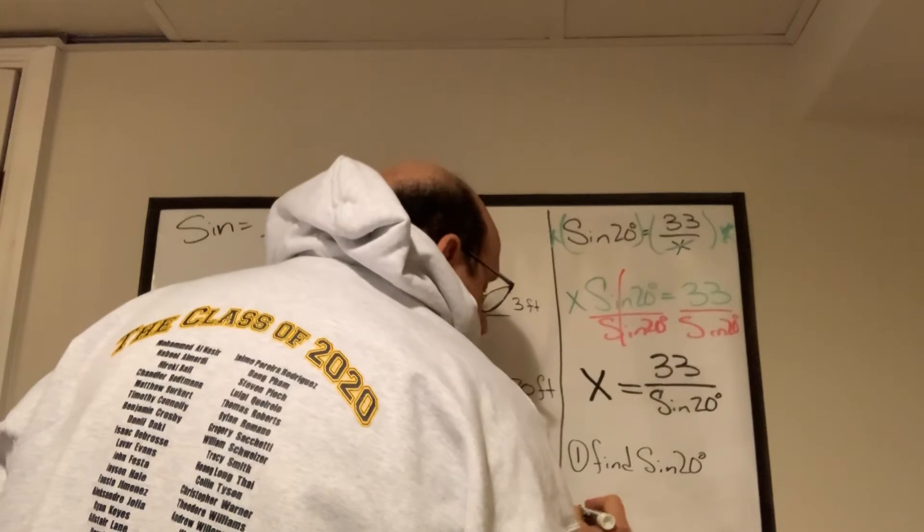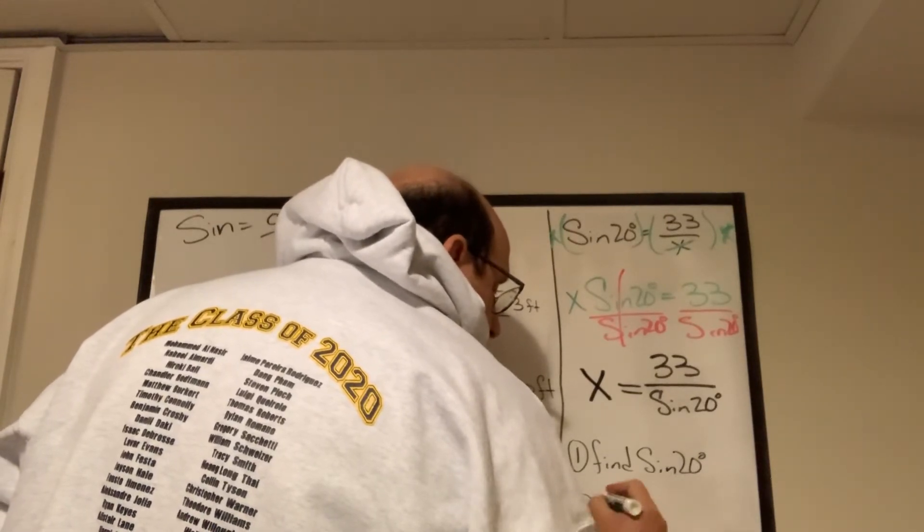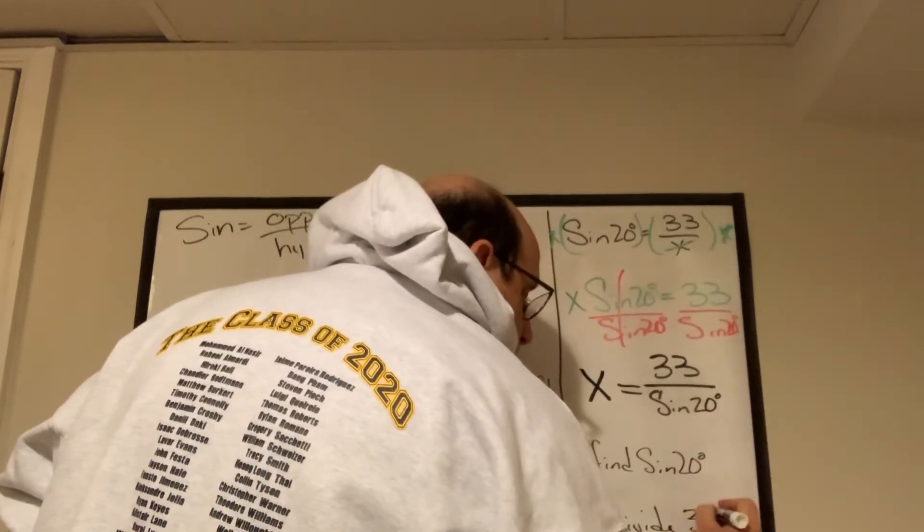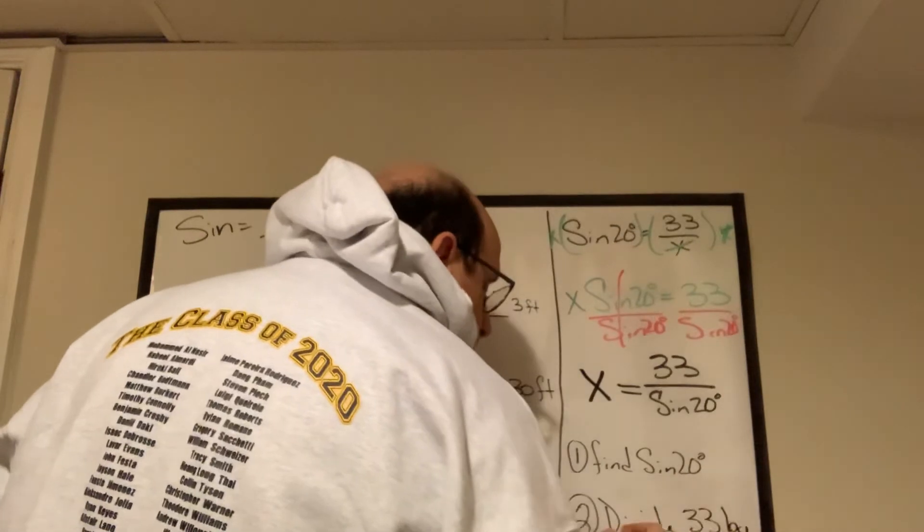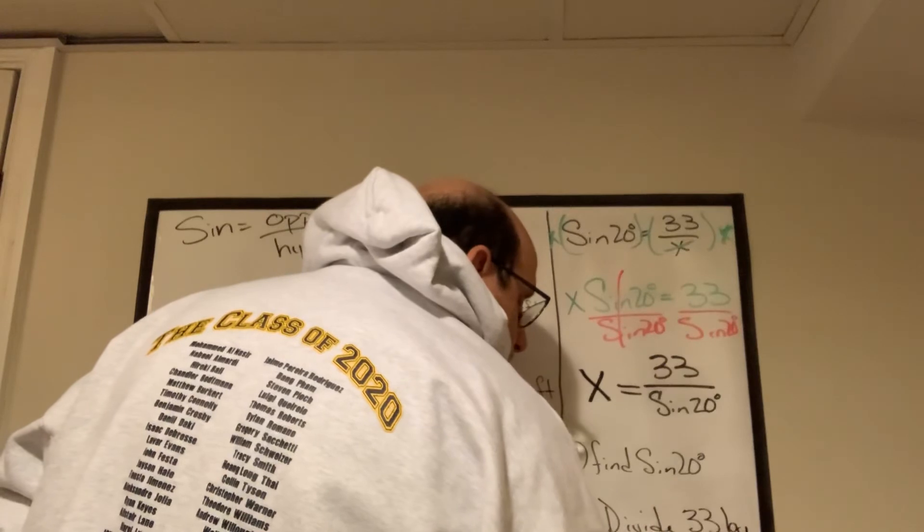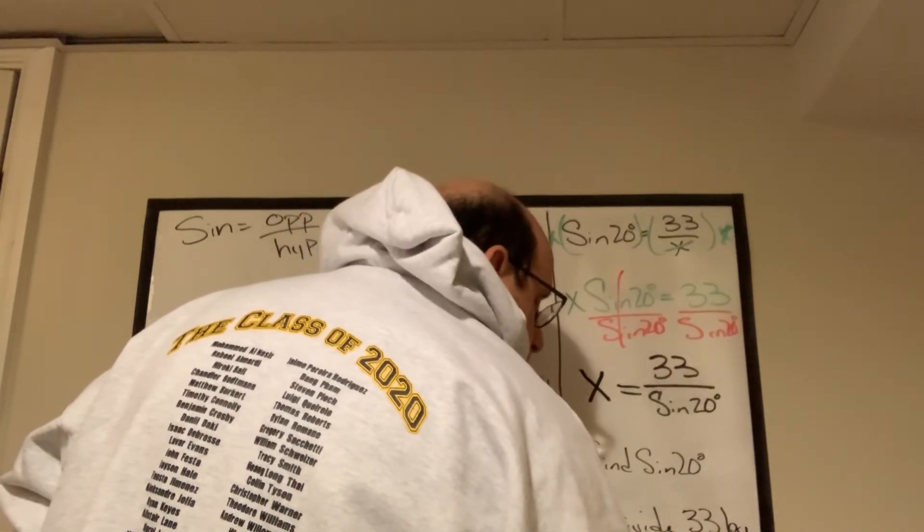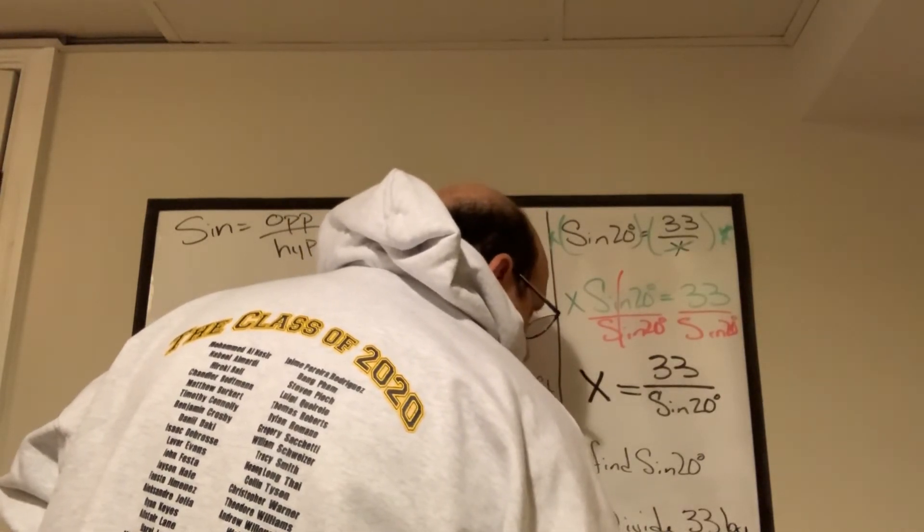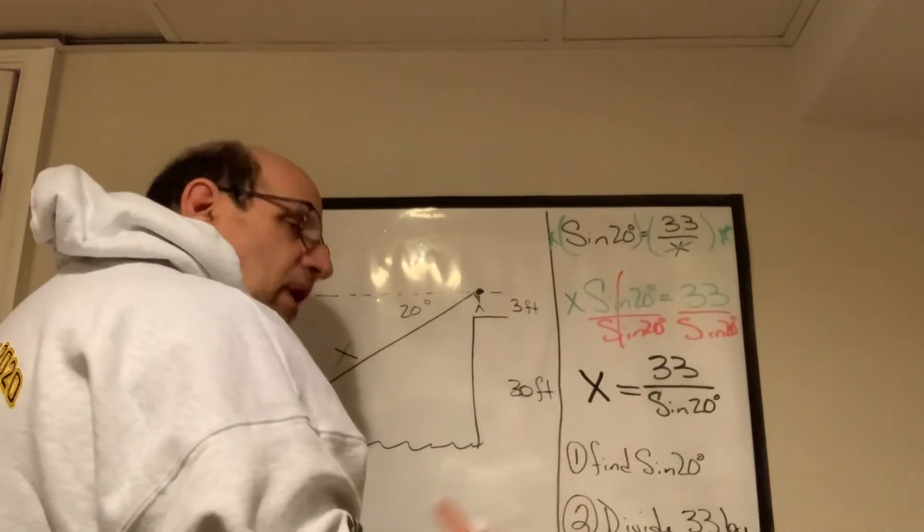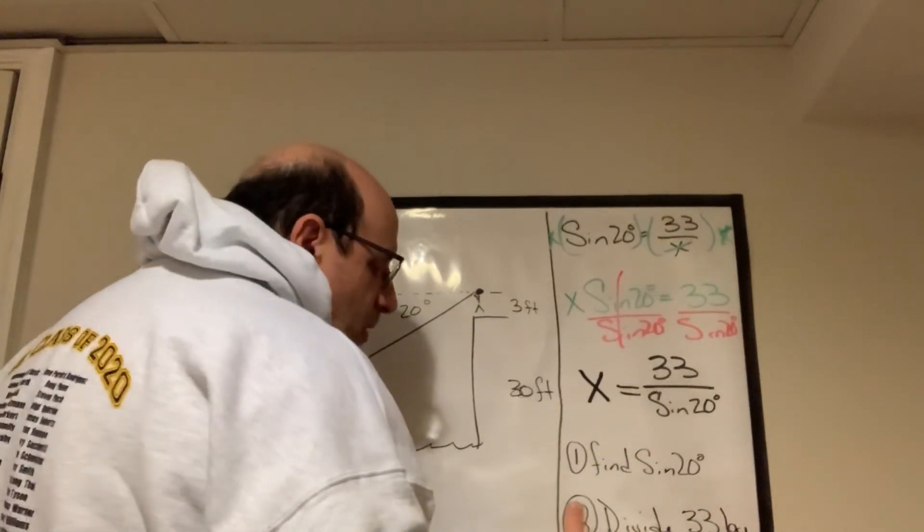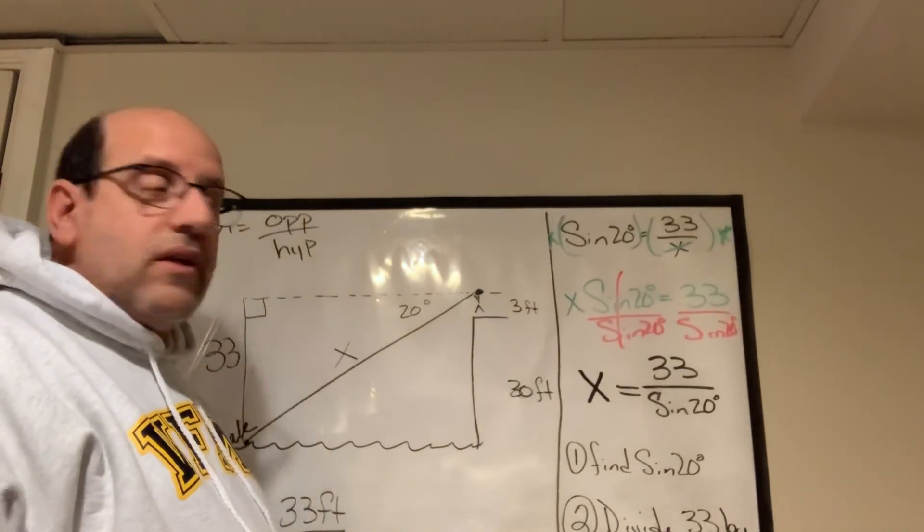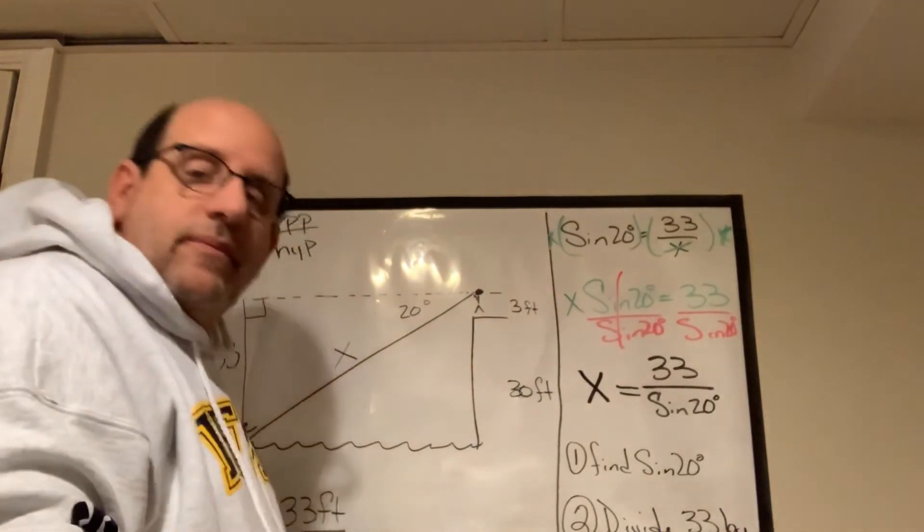Step two would be divide 33 by the decimal you found. So, you find the sine of 20, it gives you a decimal, round it to the nearest hundredth or thousandth. And then divide 33 by that decimal you found, and you have your answer. That'll give you X. And that's about it. Take care.